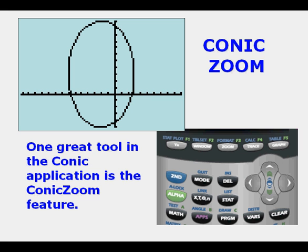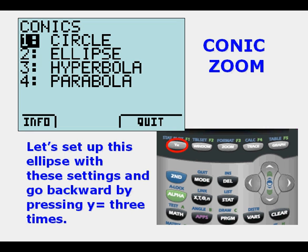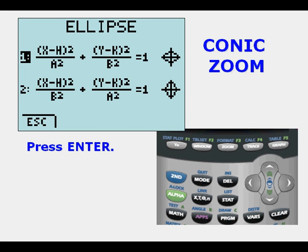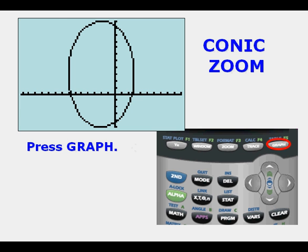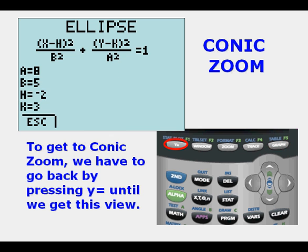Now one great tool in the conic application is called the conic zoom feature. We've already briefly introduced it earlier. Let's set up this ellipse with these settings and go backward by pressing Y equals three times. So we get to ellipse. We press Enter and arrow down once, so we're going to the second version of ellipse. We press Graph and this is what we see.